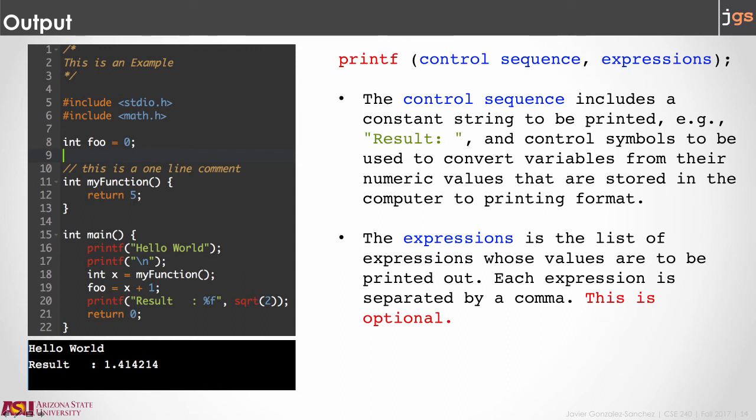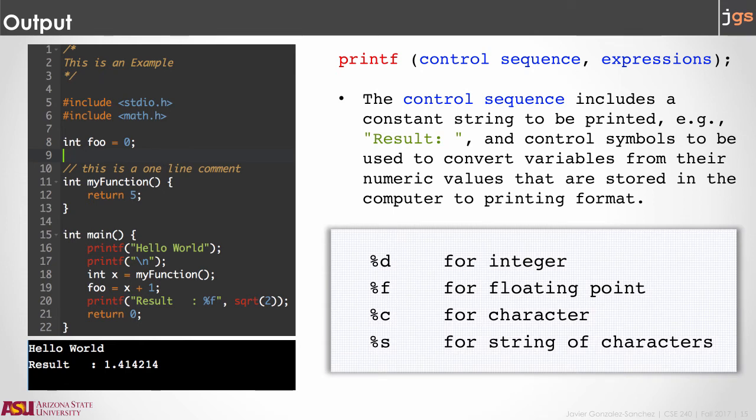To print something on the screen, we use the function printf. That function is in the library stdio.h and it has two options. Number one, you can print a string using the string as a parameter like here with hello world. But if you want to print a variable or you want to print the result of calling a method like here, you need two parameters for printf. The first is a string with any text that you want to print and with control symbols. The control symbols tell the compiler what are you going to print. Control symbols start with the percentage symbol and then a letter. The letter D represents integers, F floating point numbers, C characters, and S strings.